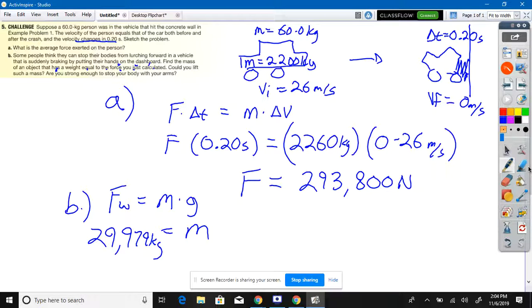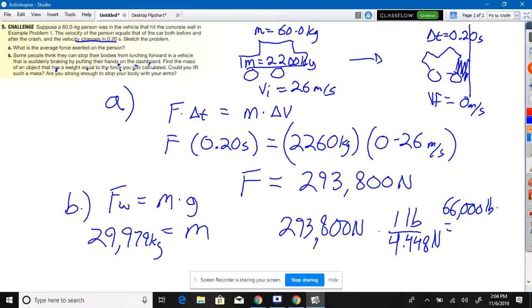Now if you want to convert newtons to pounds, it'd be 293,800 newtons, and it's approximately one pound per 4.448 newtons, which would be about 66,000 pounds. Can you push up, bench press 66,000 pounds? So when you're in the car and you smash into the wall from 26 meters per second into the wall, then if you're like this, you do a 66,000 pound bench press. Well, it's a known conversion that one pound is 4.448 newtons.